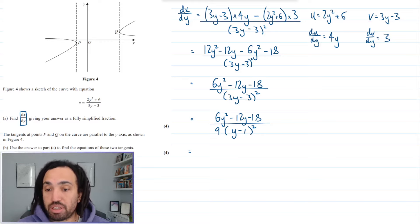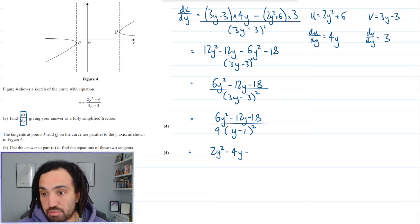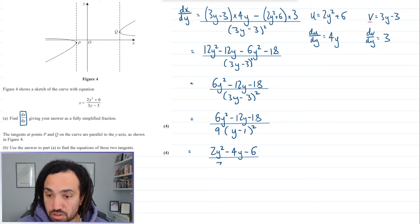So now we can divide everything by 3. So we get 2y squared minus 4y minus 6 all over 3 lots of y minus 1 all squared.